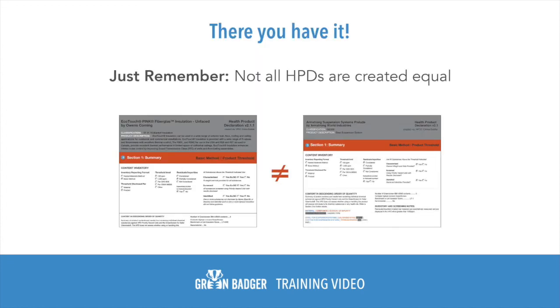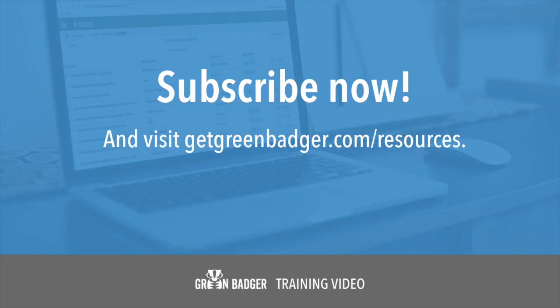So there you have it. Just remember, not every HPD automatically counts for LEED, but if you can verify these few data points, you'll be well on your way to earning option 1 of material ingredients in LEED version 4 and 4.1. Make sure to follow our YouTube channel for more great content, or visit getgreenbadger.com/resources.